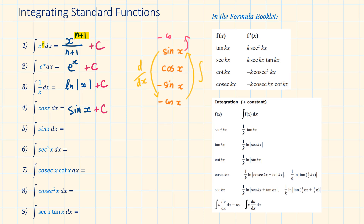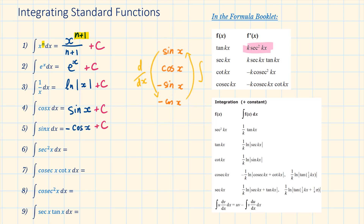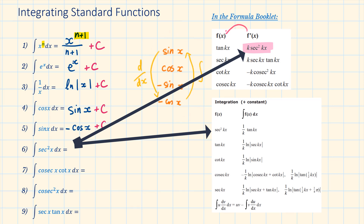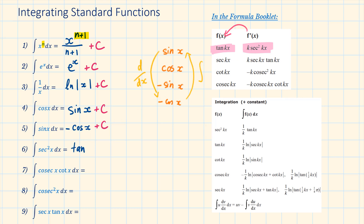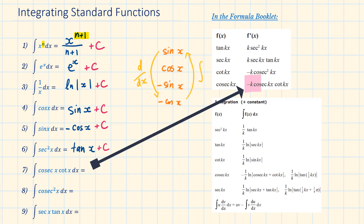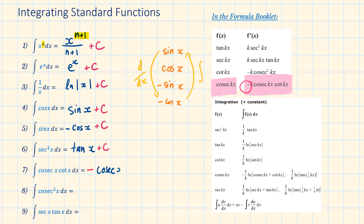Question 5: looking at our ordered cyclical list, integrating sin x is equal to minus cos x plus c. Question 6: this can be found in both the differentiation and integration list — integrating sec squared x is equal to tan x plus c. The standard function from question 7 can be found in the differentiation list, but notice we have a few extra letters and a negative. The k represents a constant — we are not going to cover that in this video, but we have a minus there, so we really have to take that into account. The solution is minus cos x plus c.